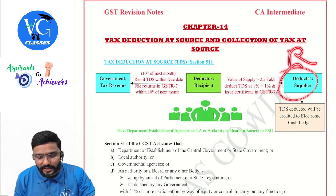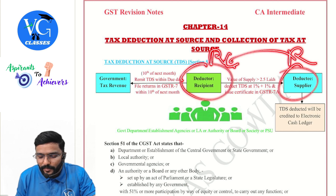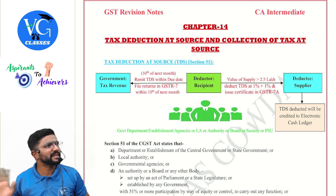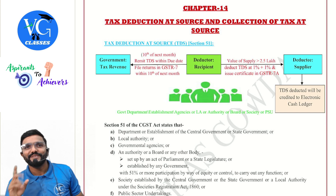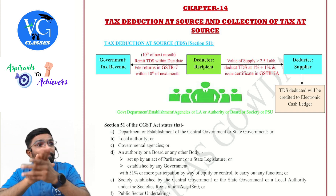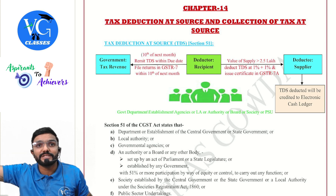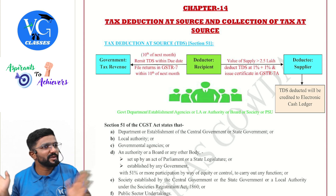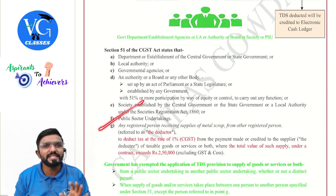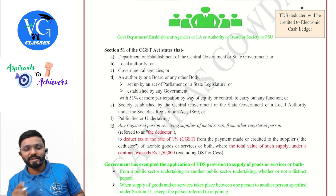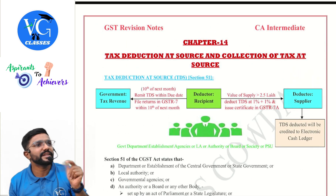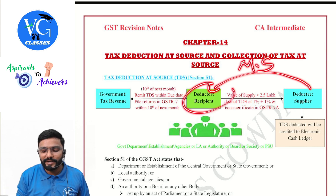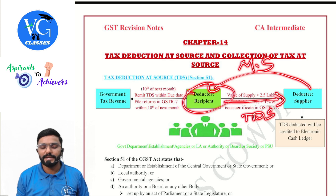Any registered person receiving supplies of metal scrap from another registered person is also now covered. The supplier is registered and so is the recipient. RCM is not applicable here because the supplier is registered — when the supplier is registered, RCM stops and FCM starts. So here, when this registered supplier supplies metal scrap to the government, the government when making payment has to deduct TDS.